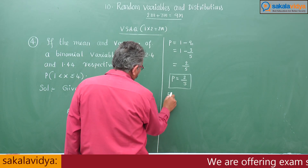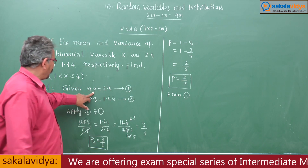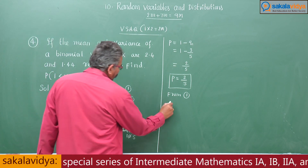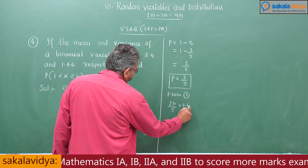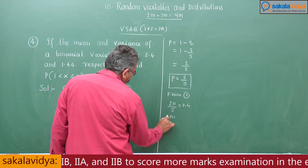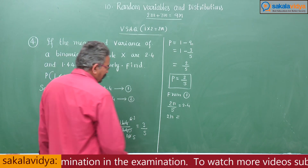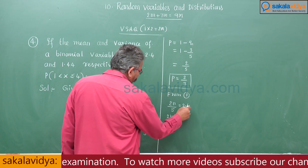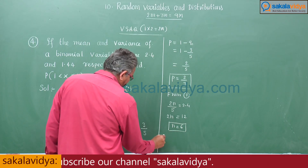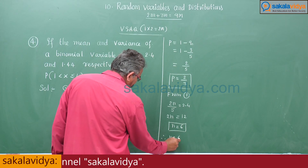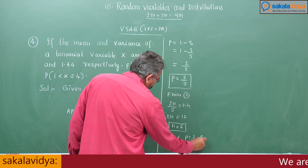From equation 1, replacing P with 2/5: N × (2/5) = 2.4, so 2N = 2.4 × 5 = 12, giving N = 6. Therefore N = 6, P = 2/5, Q = 3/5.